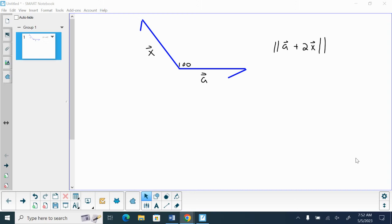So we want to find the magnitude of a plus 2x. We have the two vectors here connected at the tails. The first thing that we should look at is drawing a representation of a plus 2x.